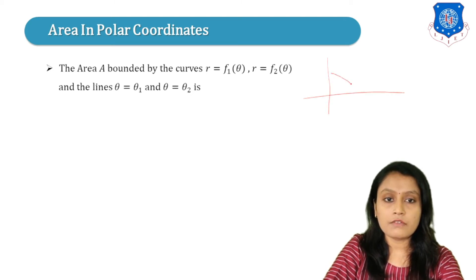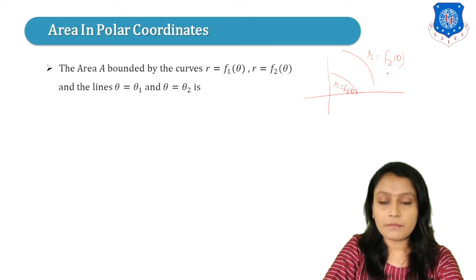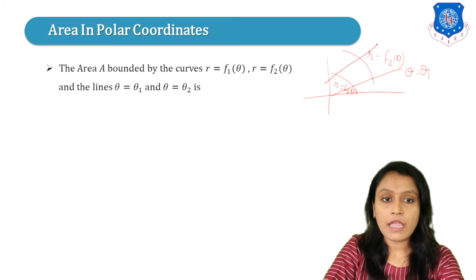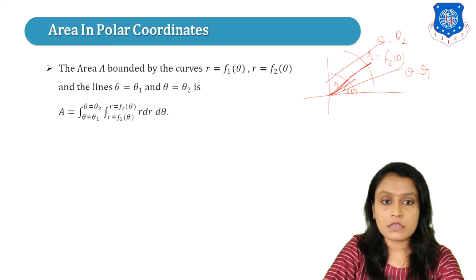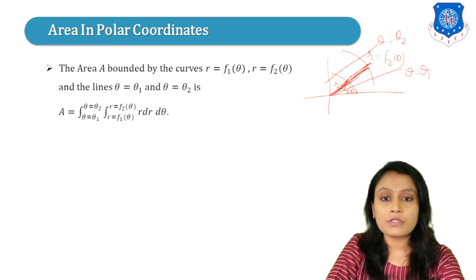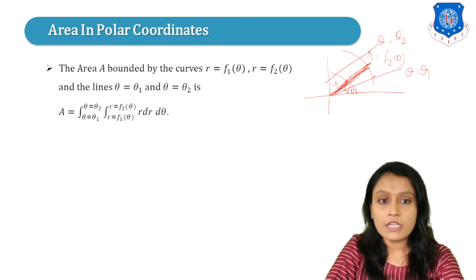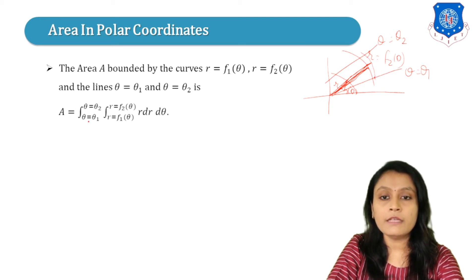We have the curve R equals F1(theta) and another curve R equals F2(theta), bounded by lines theta equals theta1 and theta equals theta2. The area is given by the double integration from theta1 to theta2. The elementary radius vector enters the region from R equals F1(theta) and exits at R equals F2(theta), so the limits of R are F1(theta) to F2(theta), and the limits of theta are theta1 to theta2.